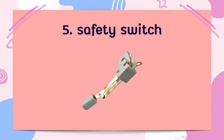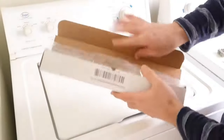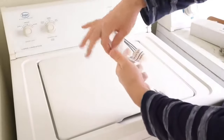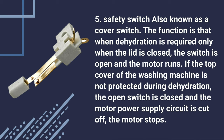Fifth, Safety Switch. Also known as a Cover Switch. During dehydration, it requires only that the lid is closed — the switch is open and the motor runs. It is the top cover of the washing machine. It is not protected during dehydration. The open switch is closed and the motor power supply is cut off. The motor stops.